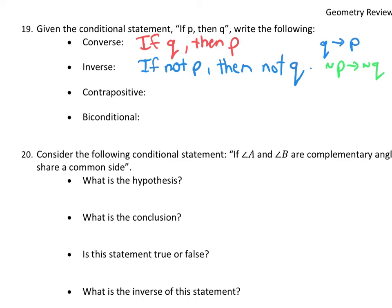The contrapositive — the hypothesis and conclusion both switch and are both negated. So it becomes: if not-q, then not-p. In shorthand: not-q implies not-p.